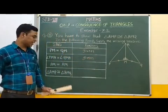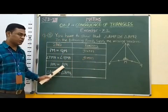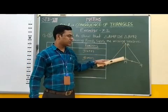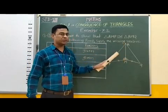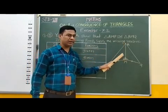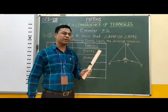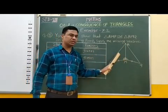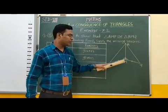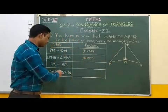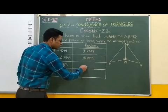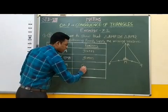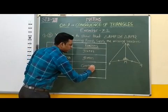The next step is AM is equal to AM. In this figure, side AM is common to both triangles, and a common side is always equal for both triangles. Therefore, the reason for this step is: common, or we can write common side.